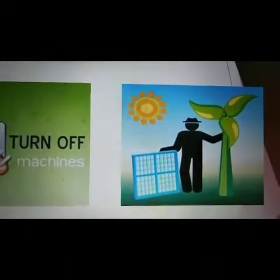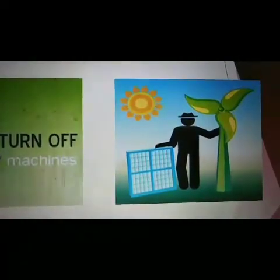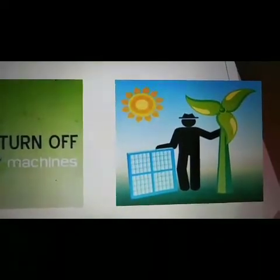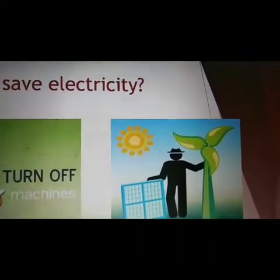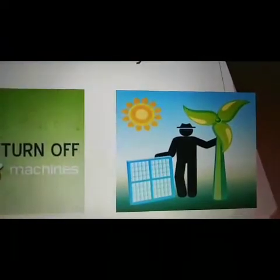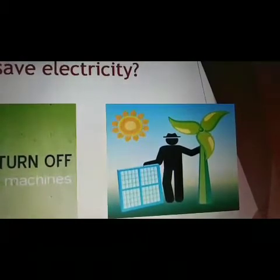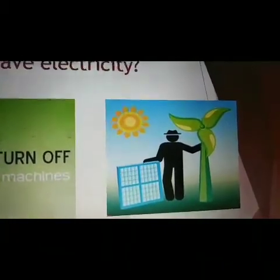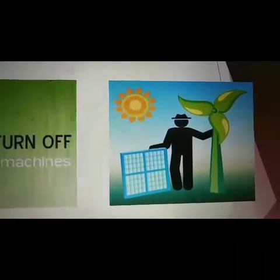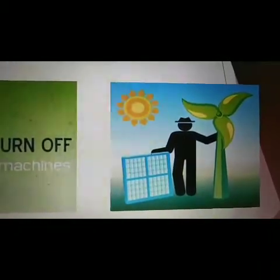One more thing we can do to save electricity: as we learned before, we get electricity from power stations. In the power stations, they burn fuels to make electricity. But the fuel might run out one day. This is why we need to save electricity and find other sources of energy. Sun and wind are examples of other sources of energy.